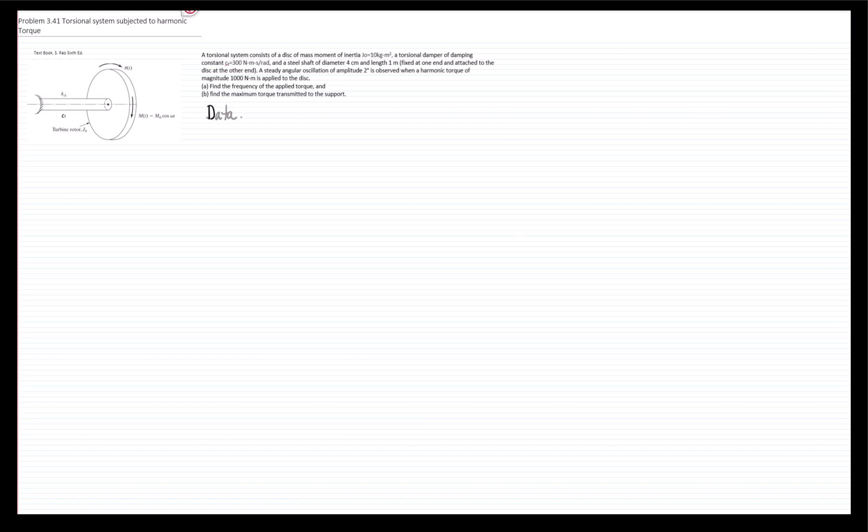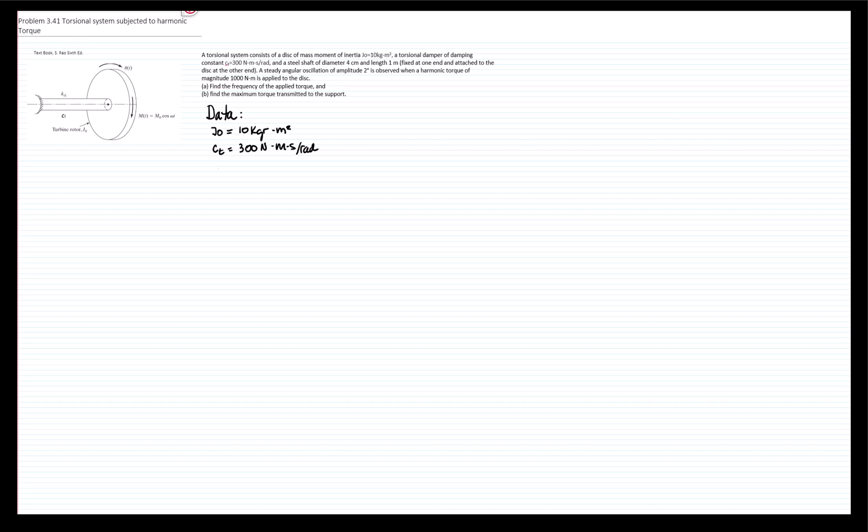So the data given is that we have the mass moment of inertia, the constant of the damper, and the characteristics of the shaft that will allow us to calculate the equivalent constant of the spring. The shaft is made out of steel. They tell us that we have a moment applied to the system, which is this one right here, and we have a response. So we have a constant moment.